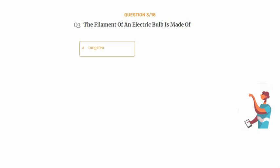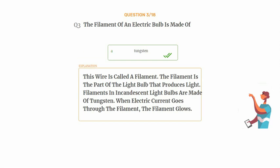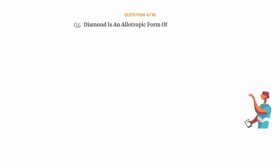Question number three: the filament of an electric bulb is made of — option A: tungsten, option B: nichrome, option C: graphite, option D: iron. The correct answer is option A: tungsten. This wire is called a filament. The filament is the part of the light bulb that produces light. Filaments in incandescent light bulbs are made of tungsten; when electric current goes through the filament, the filament glows.